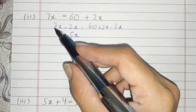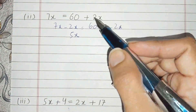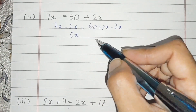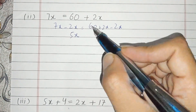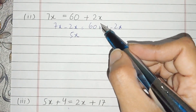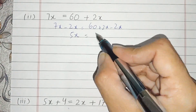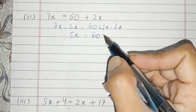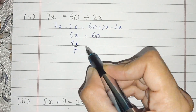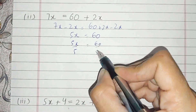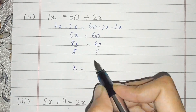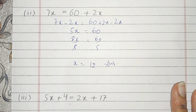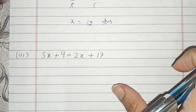This is the method. We get minus 2x. The 5 cancels and x, and this is 12 — that is the answer. Now, students, part number 2 is solved.